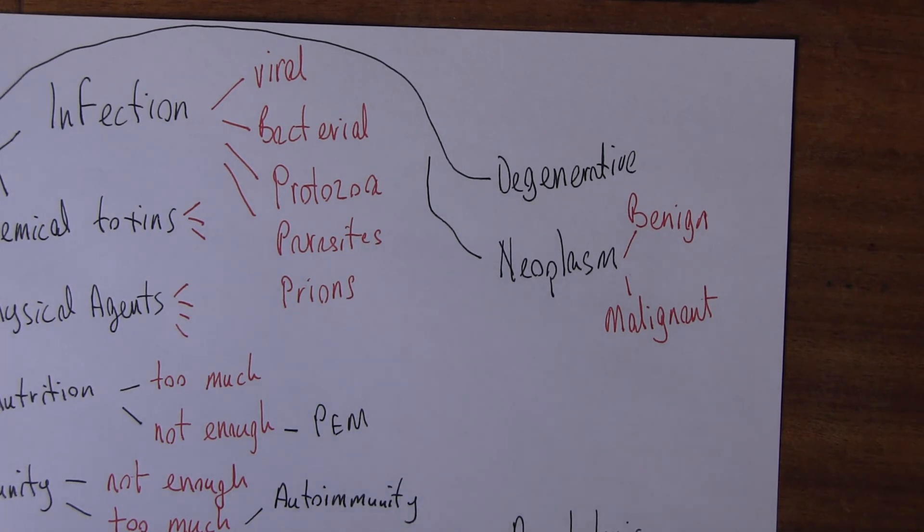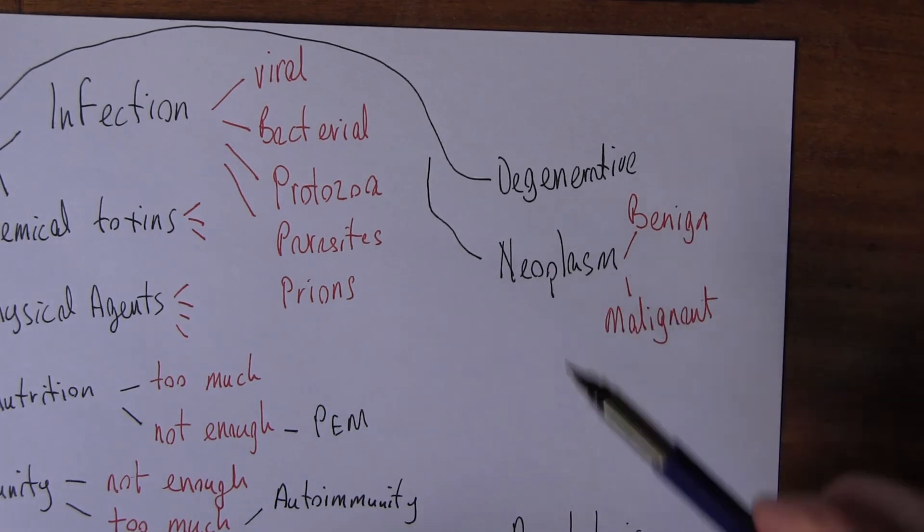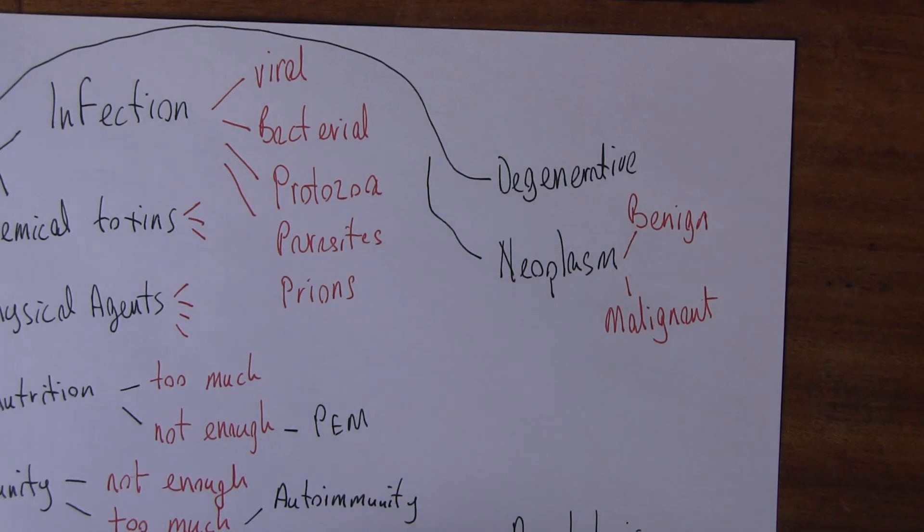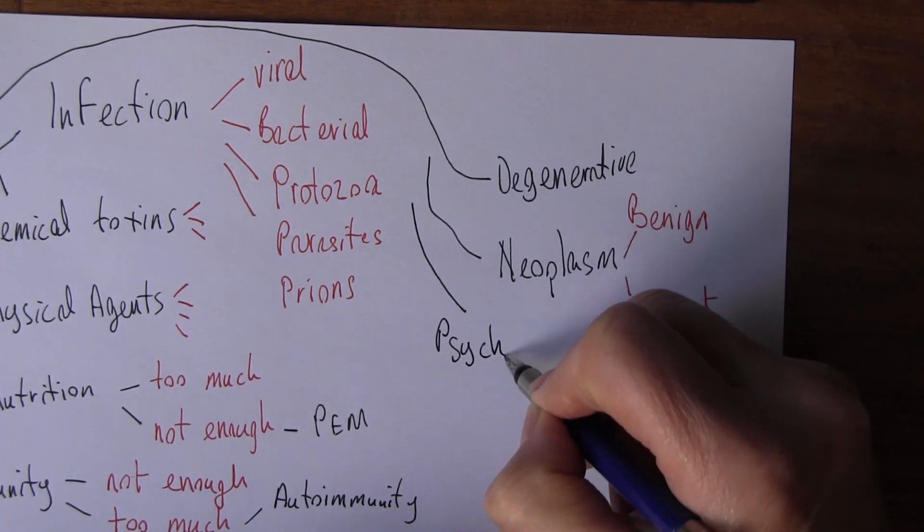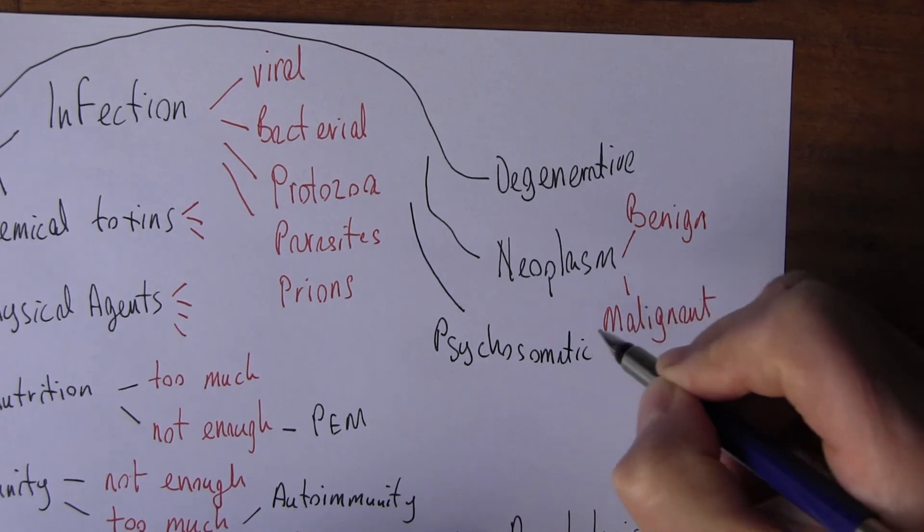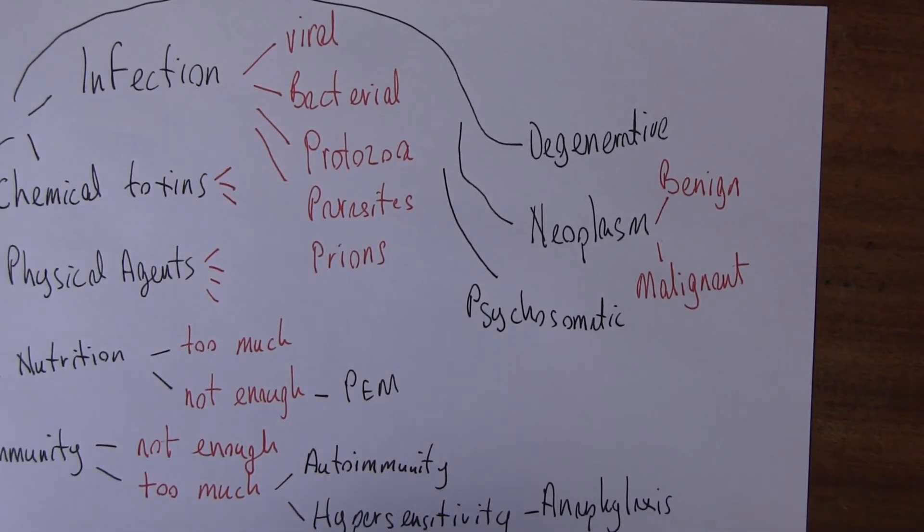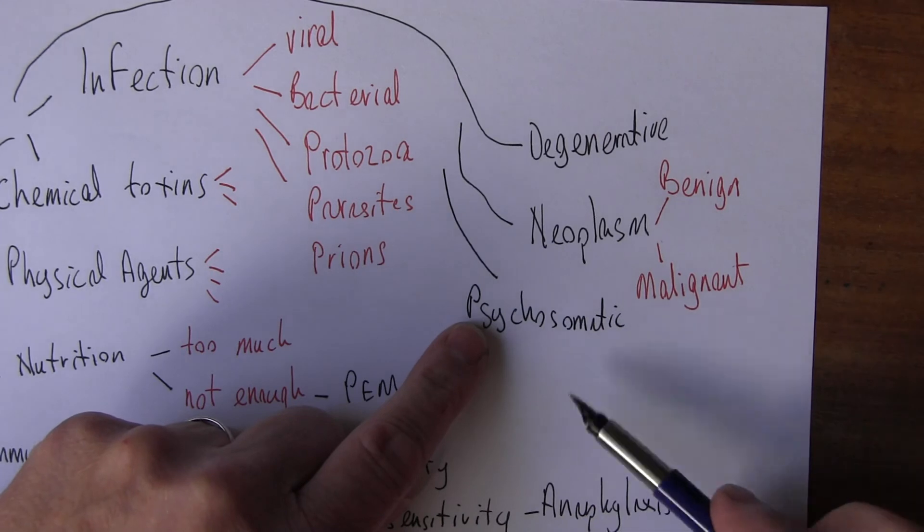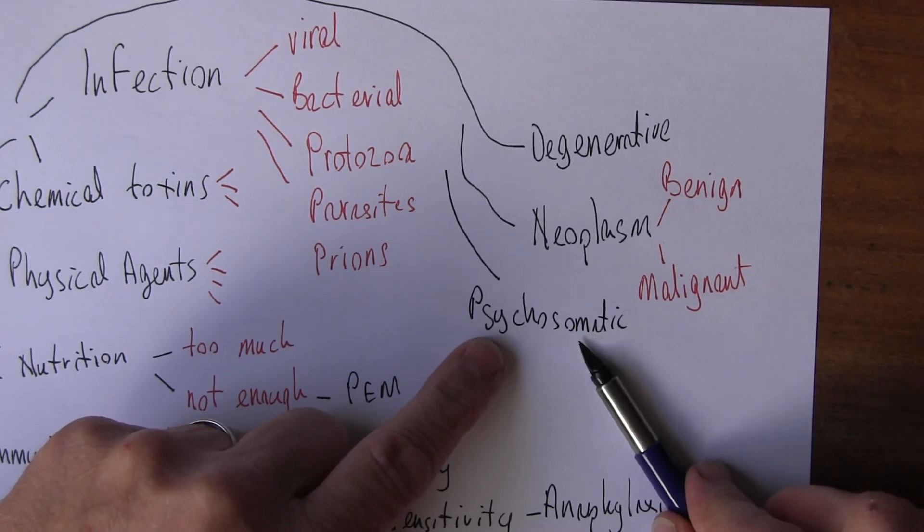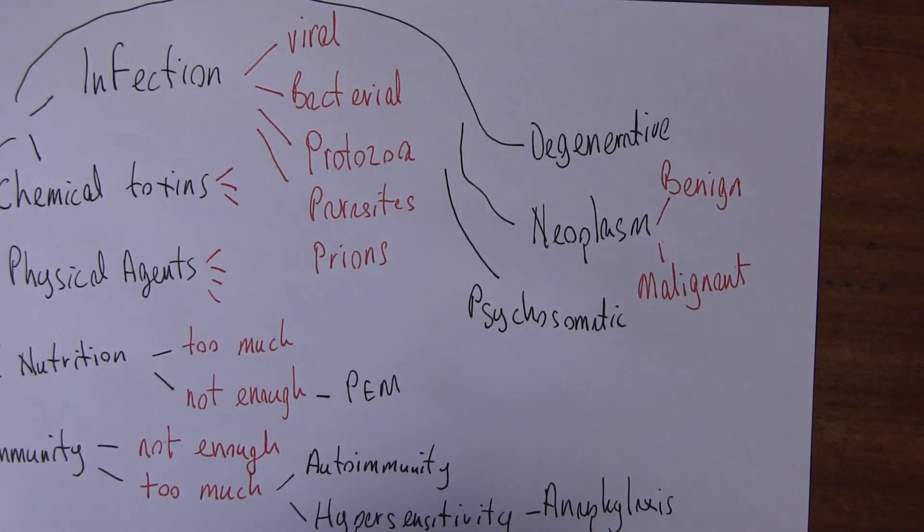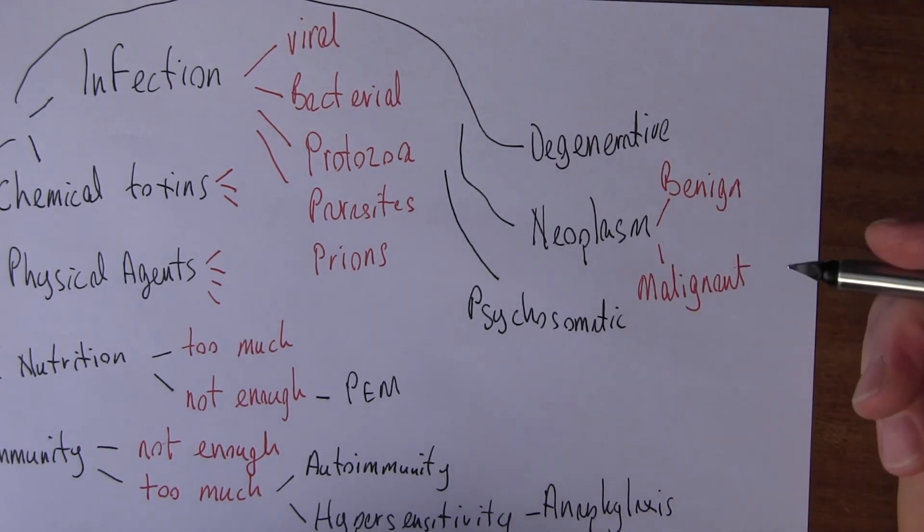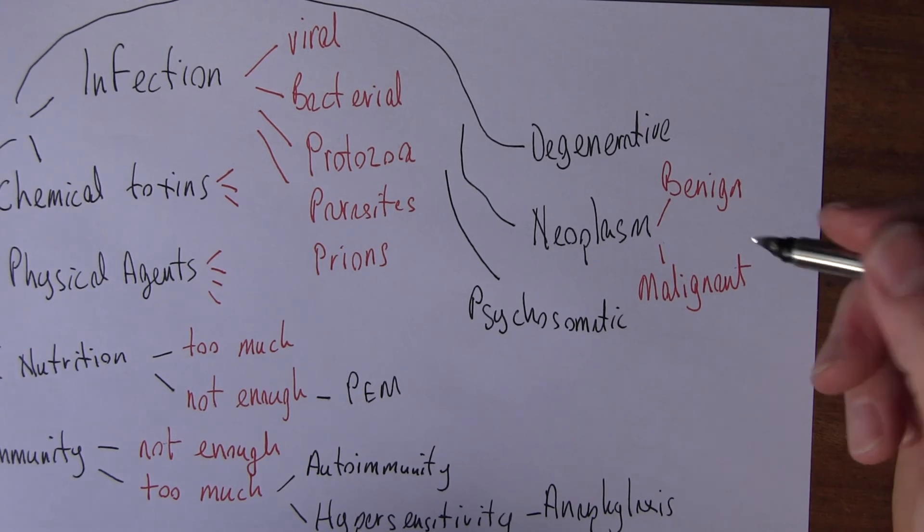Just trying to think of other classifications of disease really. I mean thinking about broad groupings of diseases. Of course within these there's thousands of different diseases. But we could have psychosomatic here as a group. Psychosomatic diseases. I mean psych means mind and soma means body. So these are the interactions between the mind and the body. Psychosomatic. So the psych, the mind, can affect the body and the body can affect the mind. It's a two-way process.